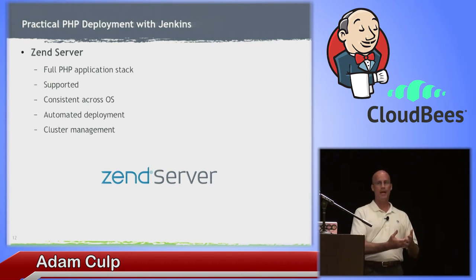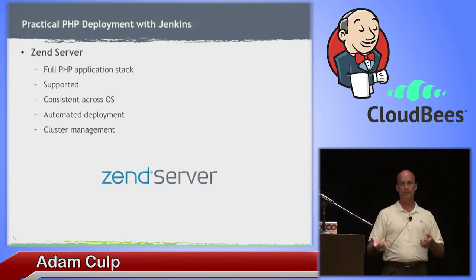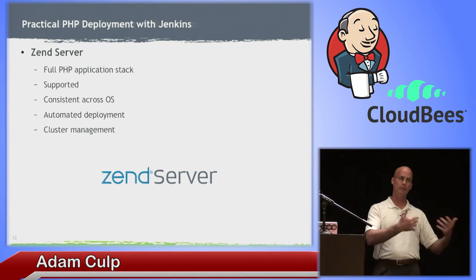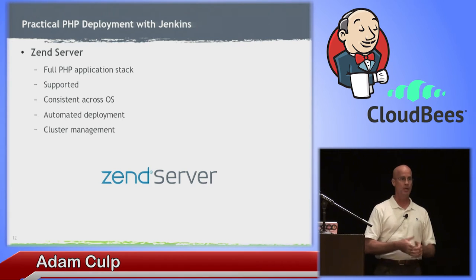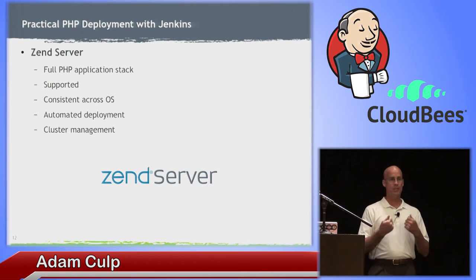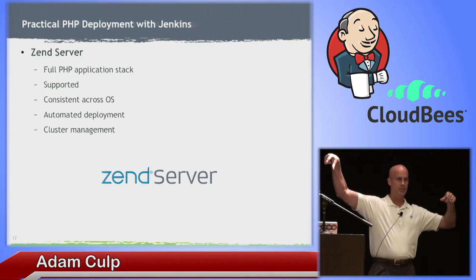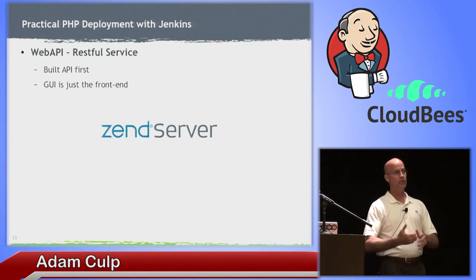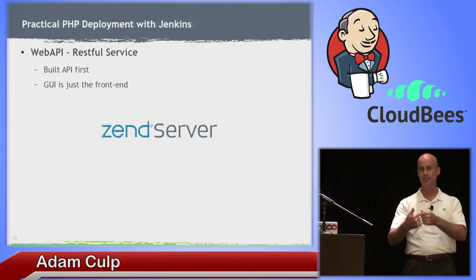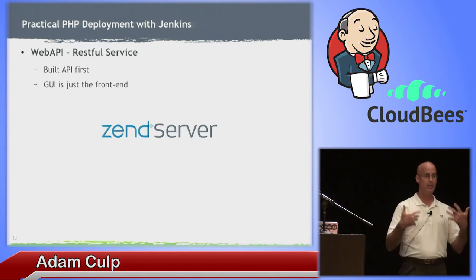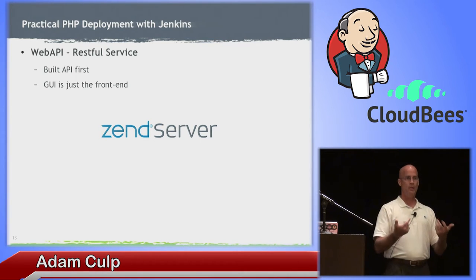With Zend Server, it is a full PHP stack. It's supported, and the nice thing is it's the same across OSes — whether you install it on Windows, Mac, or Linux, it's consistent. Oftentimes developers use one type of system, maybe a Mac or Windows, then deploy to a Linux server or even an IBM mainframe. It also makes automated deployment much easier, as well as cluster management. You push to one server and let Zend Server handle the rollout amongst its different nodes in the cluster. And Zend Server is API-enabled — built API-first — so we can leverage that through Jenkins to tell Zend Server what to do, controlling security through API keys.